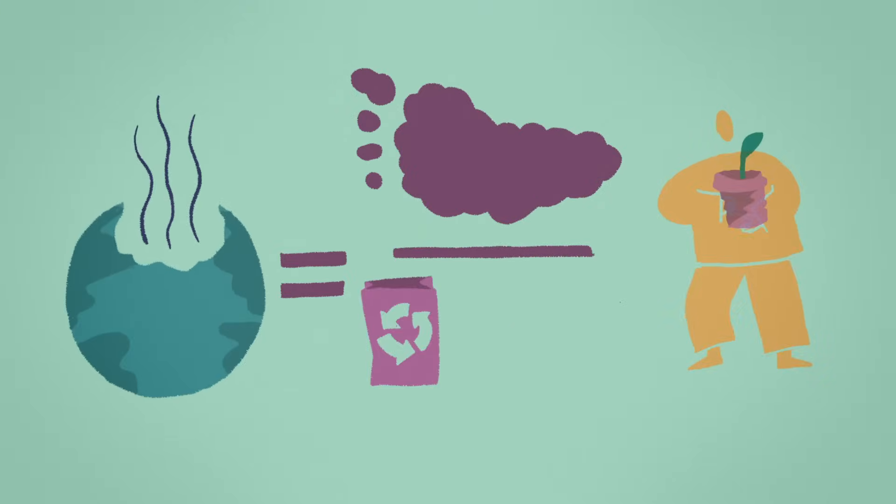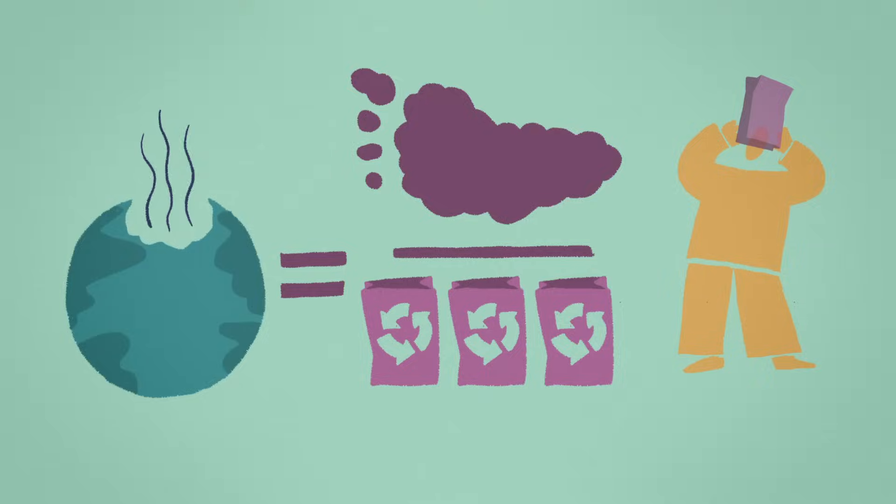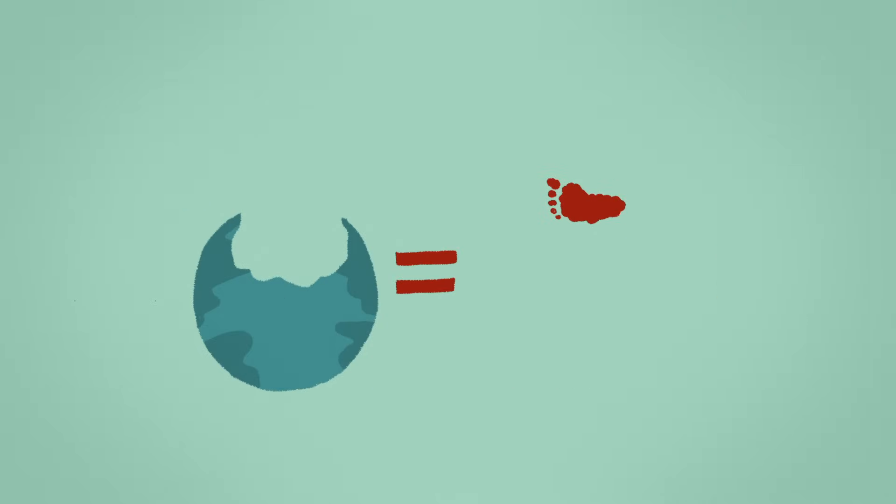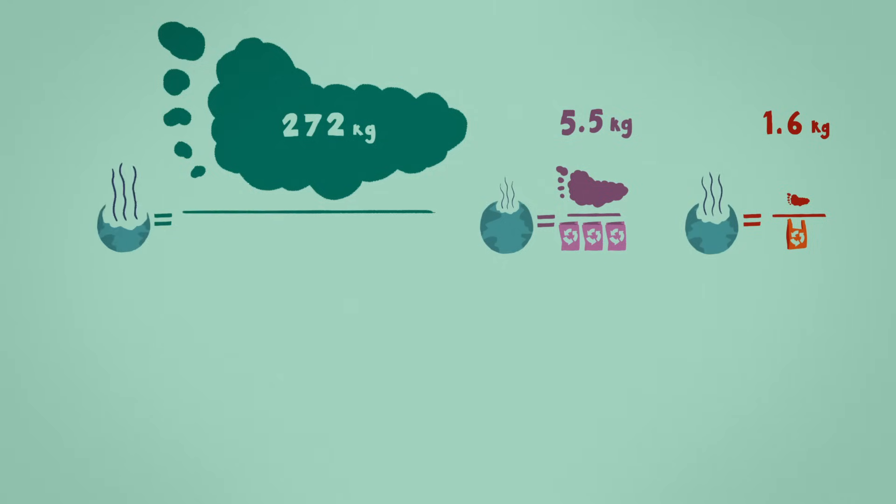For example, if a typical paper bag is reused three times, it has a lower net impact than a single-use plastic bag. The carbon footprint of a cotton tote can similarly be lowered if it's reused 131 times.